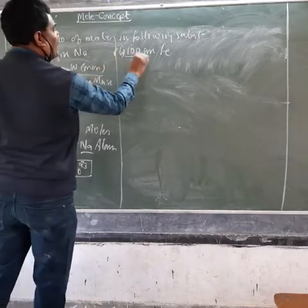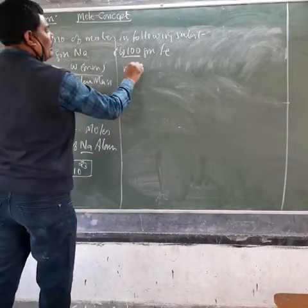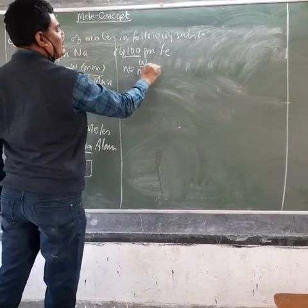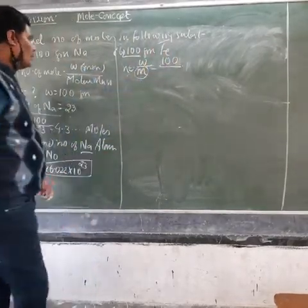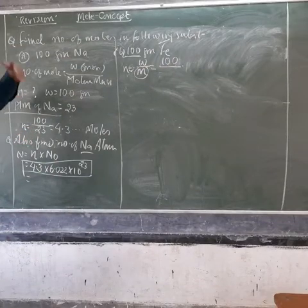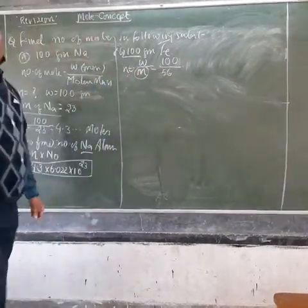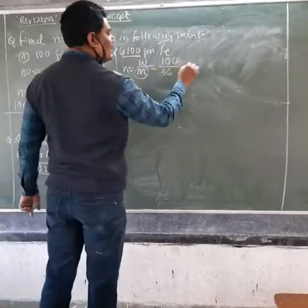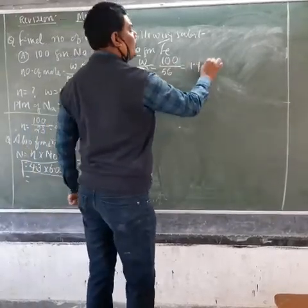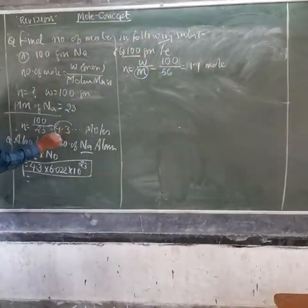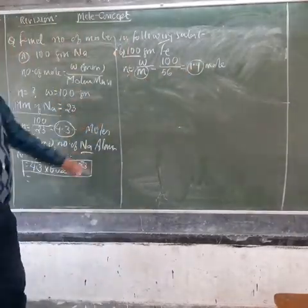For the second question, the weight of the substance is again 100 grams. We write: number of moles = weight given divided by molar mass = 100 divided by the molar mass of iron. The substance has changed, so its molar mass also changes. The molar mass of iron is 56, so you get approximately 1.9 moles. Notice: for the same weight, sodium gives 4.3 moles but iron gives only 1.9 moles.